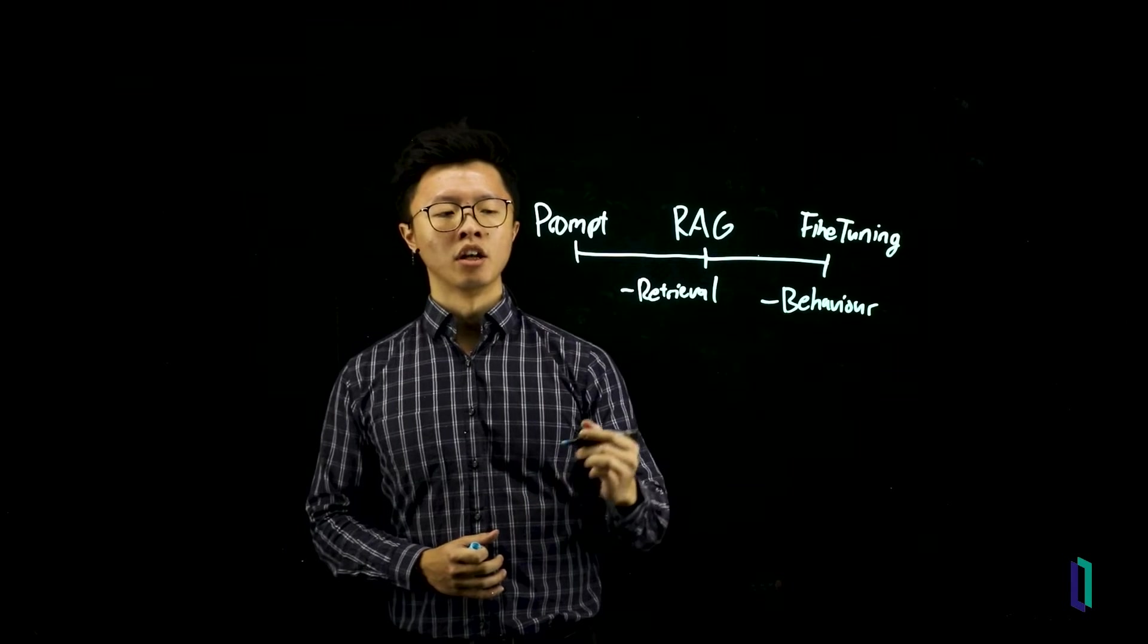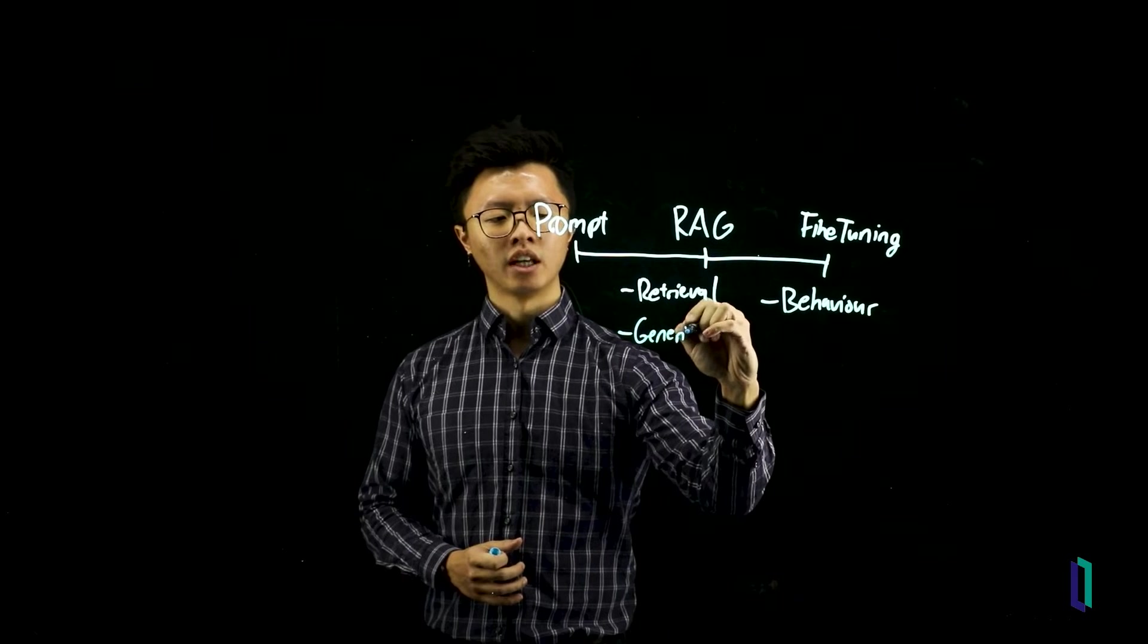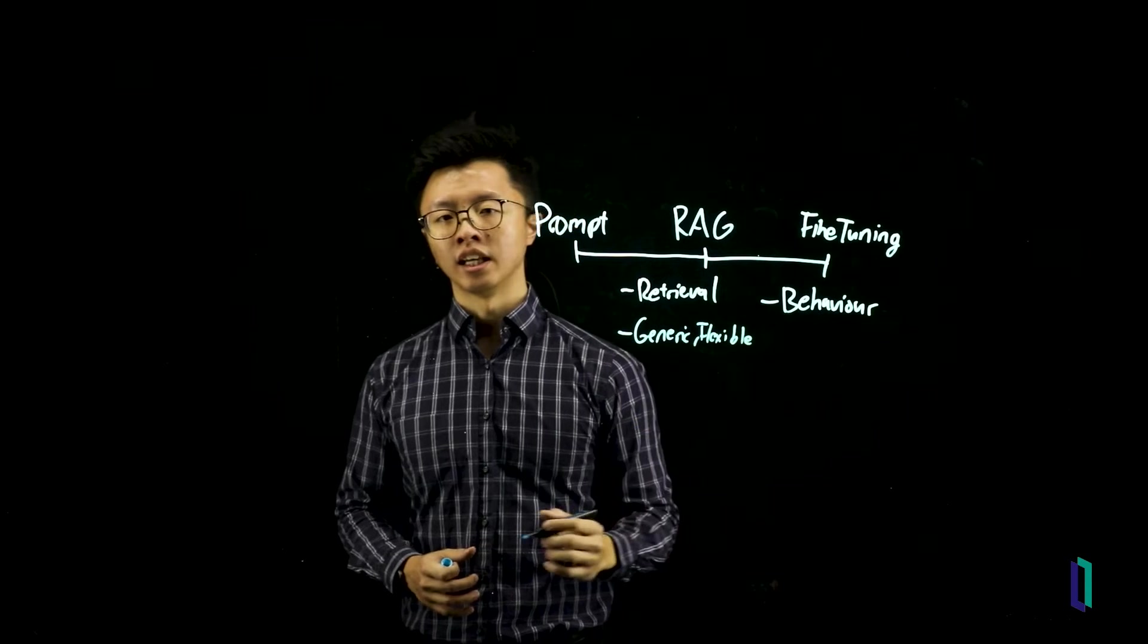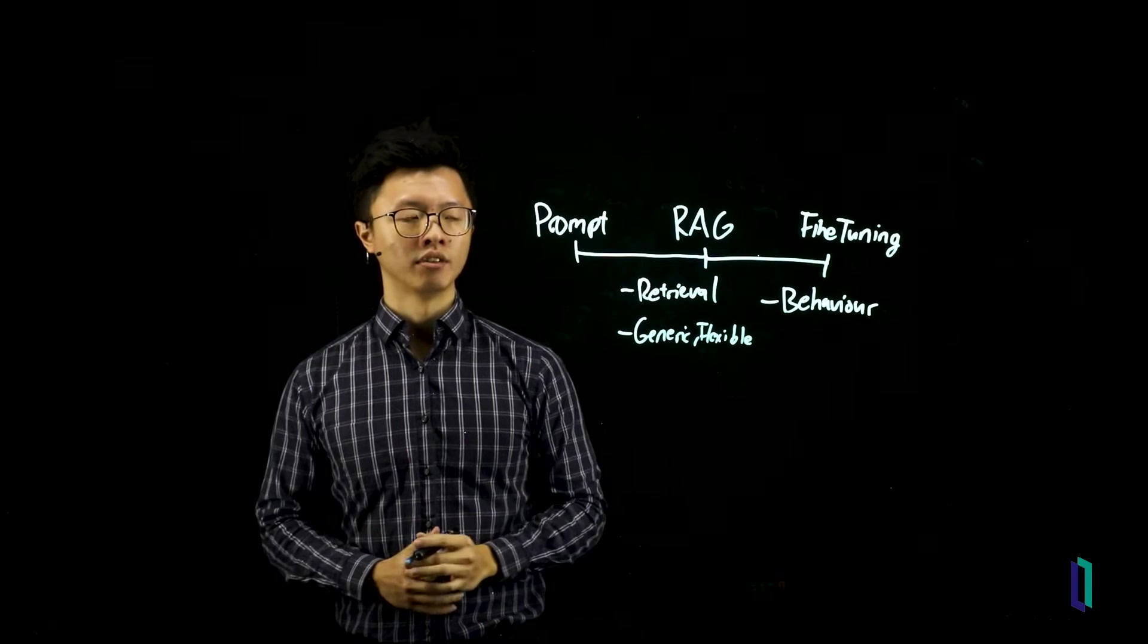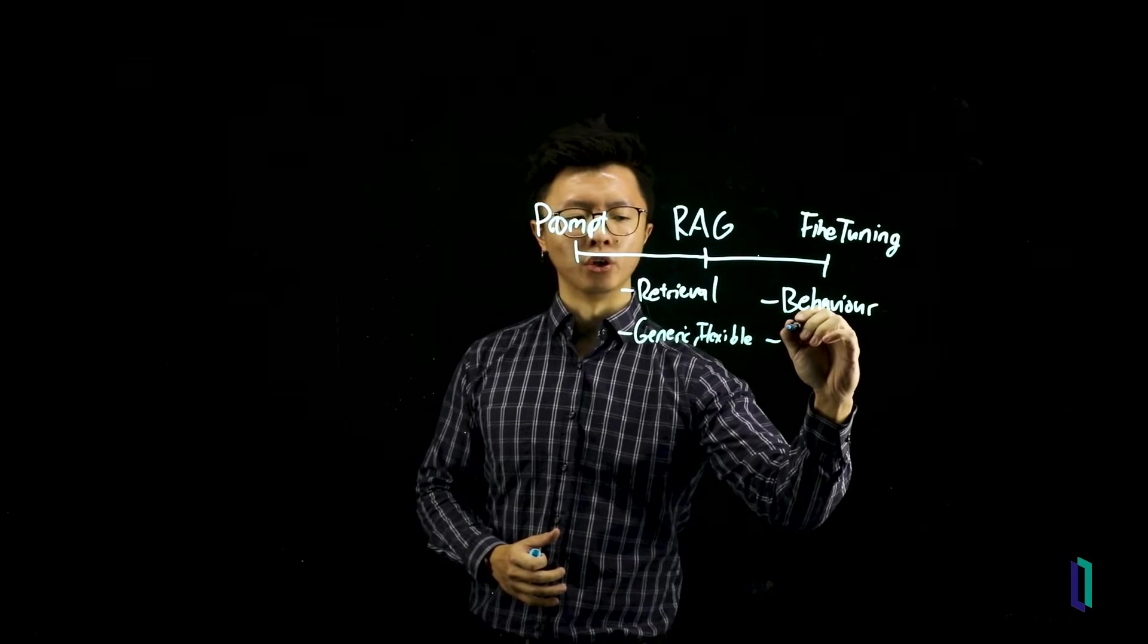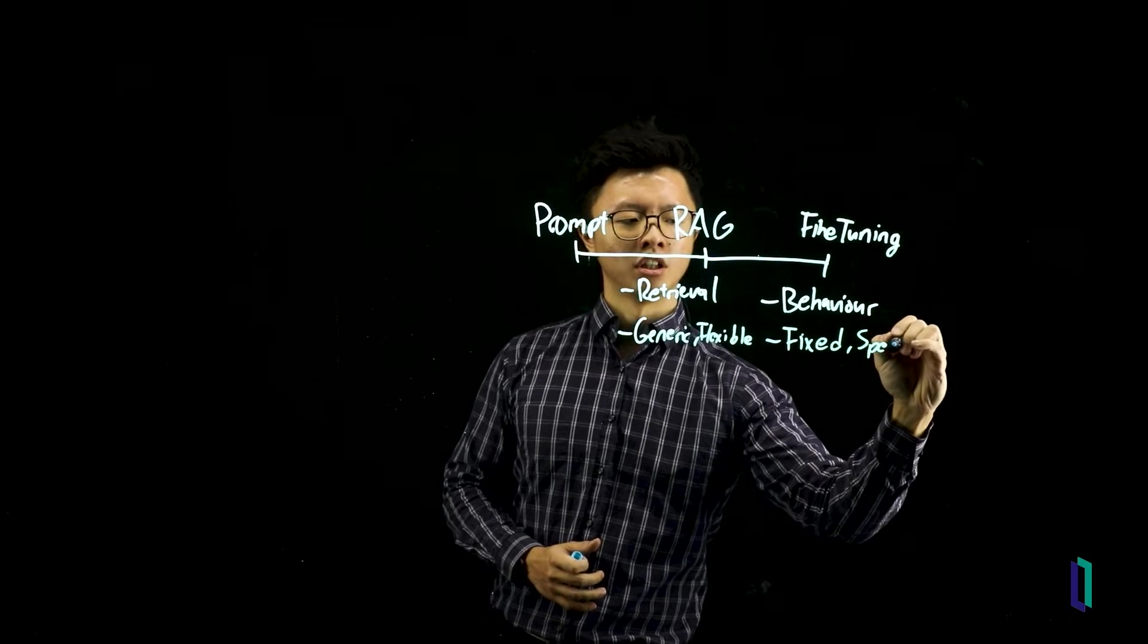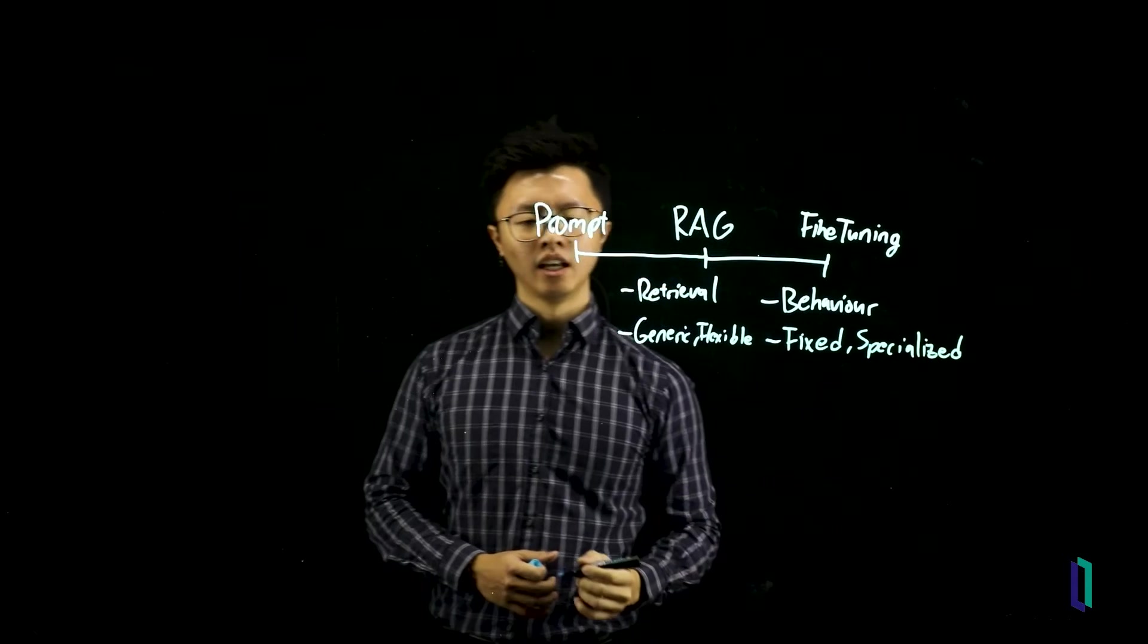The next thing to know is that RAG is typically going to be generic and much more flexible as you're dealing with a general-purpose large-language model. You can easily put together different systems and different data sources. On the other hand, fine-tuning is going to be fixed and specialize, based on what data you train it on.